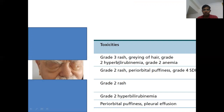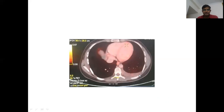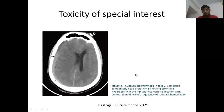Avapritinib comes with notable toxicities. Graying of hair is observed. Periorbital edema is much more pronounced than with imatinib. Some patients develop pleural effusion. The most severe toxicity is subdural hemorrhage, which occurred in one of our patients. Cognitive abnormalities are very common — occurring in 40% of patients — and one of our patients is still experiencing them, leading to dose reduction.